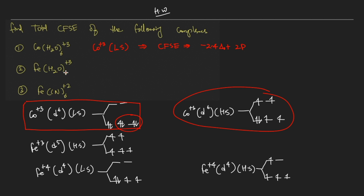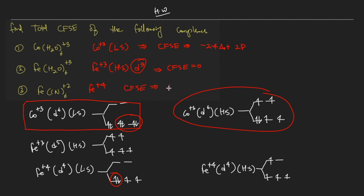For the second option, iron in the +3 state forms a high spin complex — a d⁵ system where all electrons are filled equally in all orbitals, so CFSE is zero with no pairing. For the third option, iron is in the +4 oxidation state with a strong donor ligand, making it a low spin d⁴ complex. In the high spin form there is no pairing, but in the low spin form there is one extra pairing, giving a CFSE of minus 1.6 ΔO plus 1P.